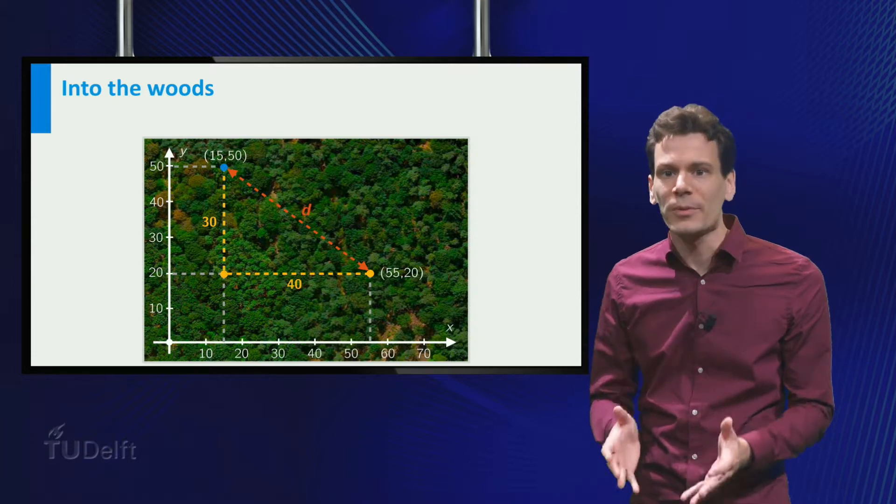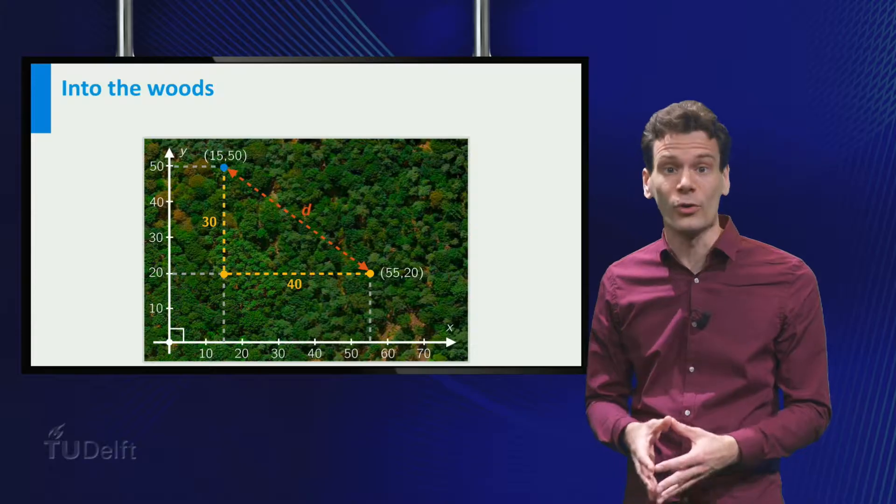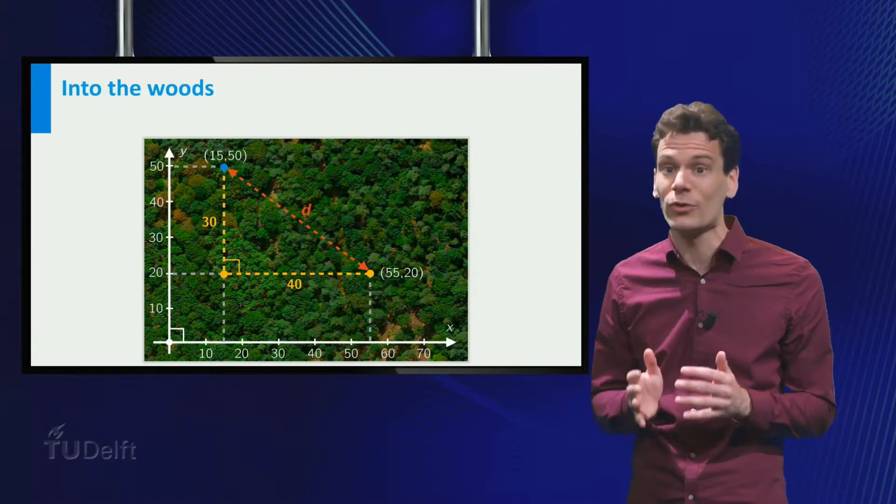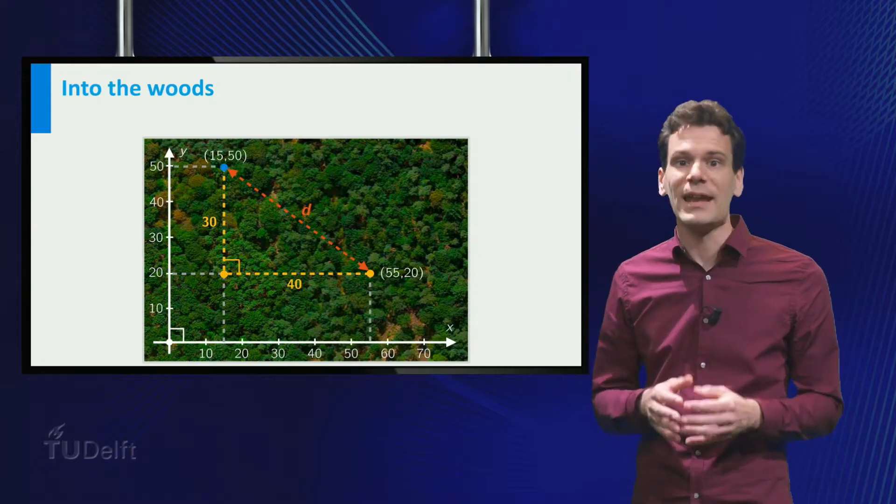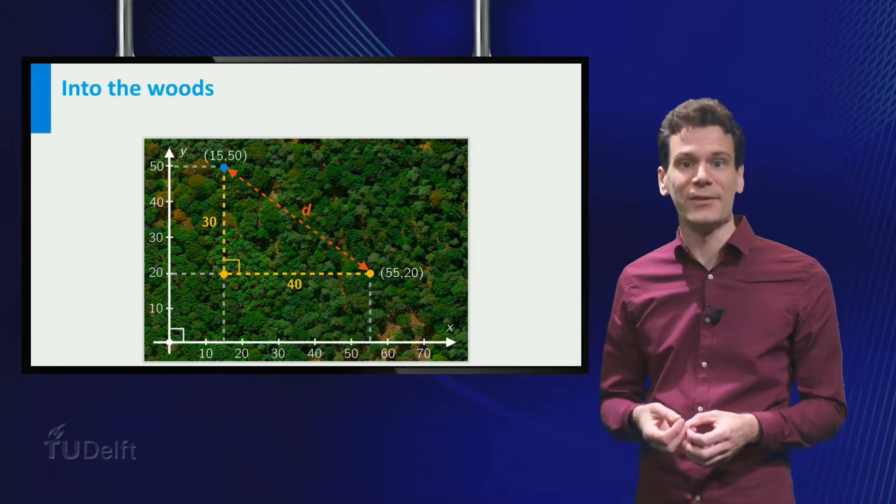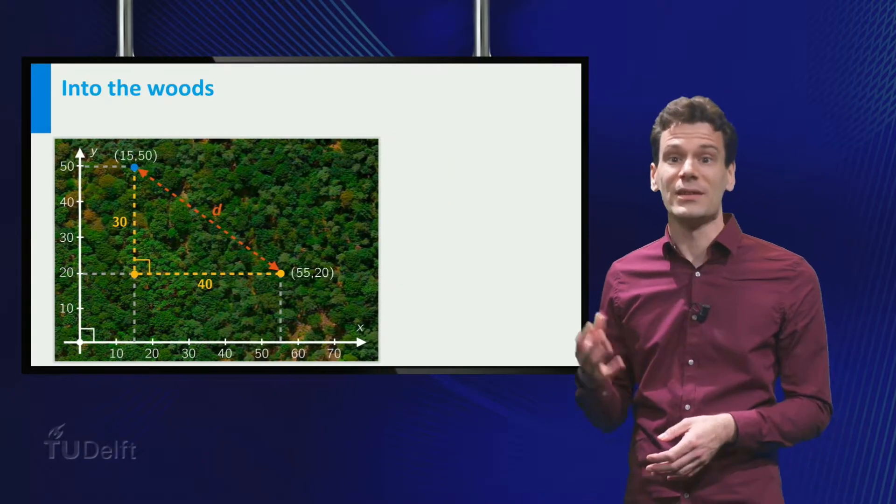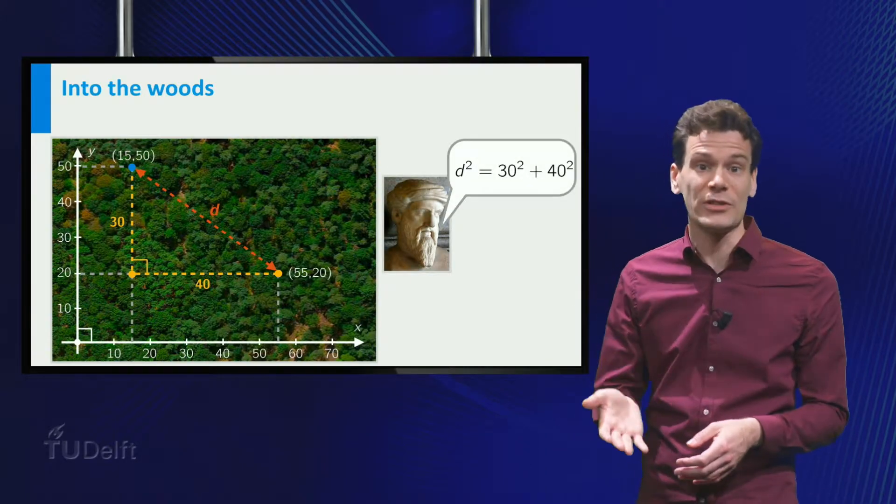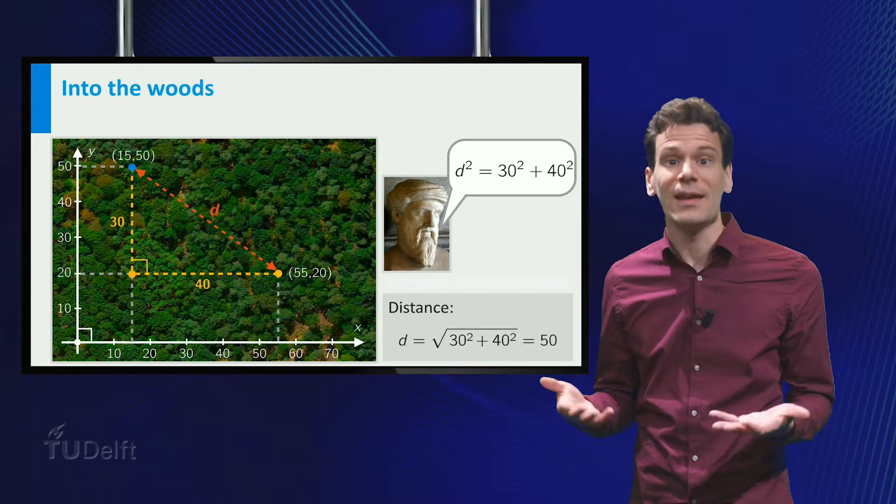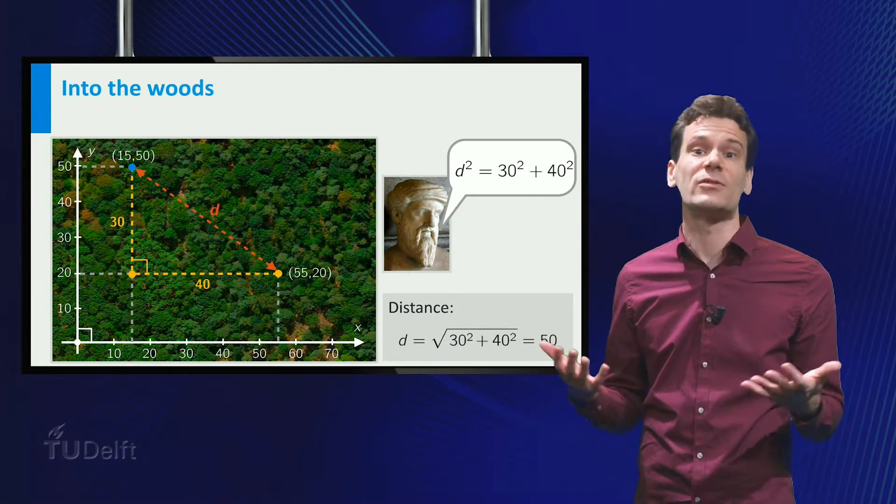Now we can use an important property of Cartesian coordinate systems. The axes are orthogonal. This means that the two parts of the path are orthogonal as well. They form the legs of a right triangle. And the hypotenuse is the line from you to your friend. We can find the length by the Pythagorean theorem, d² equals 30² plus 40². So the distance d equals the square root of 30² plus 40², which is 50 meters.